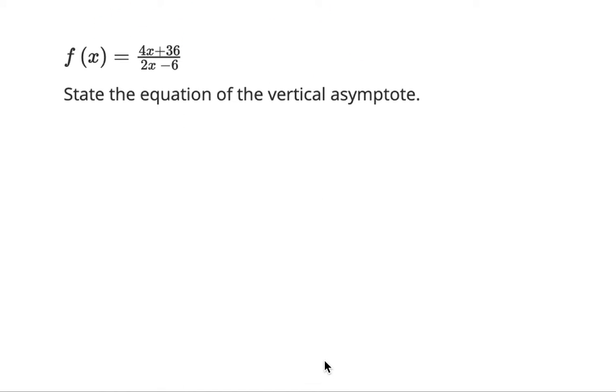Another question: state the equation of the vertical asymptote. In this case, we let the denominator equal 0. That works out here because the degree is 1 in both the numerator and denominator. So we can say 2x minus 6 equals 0, which gives 2x equals 6, so x equals 3.